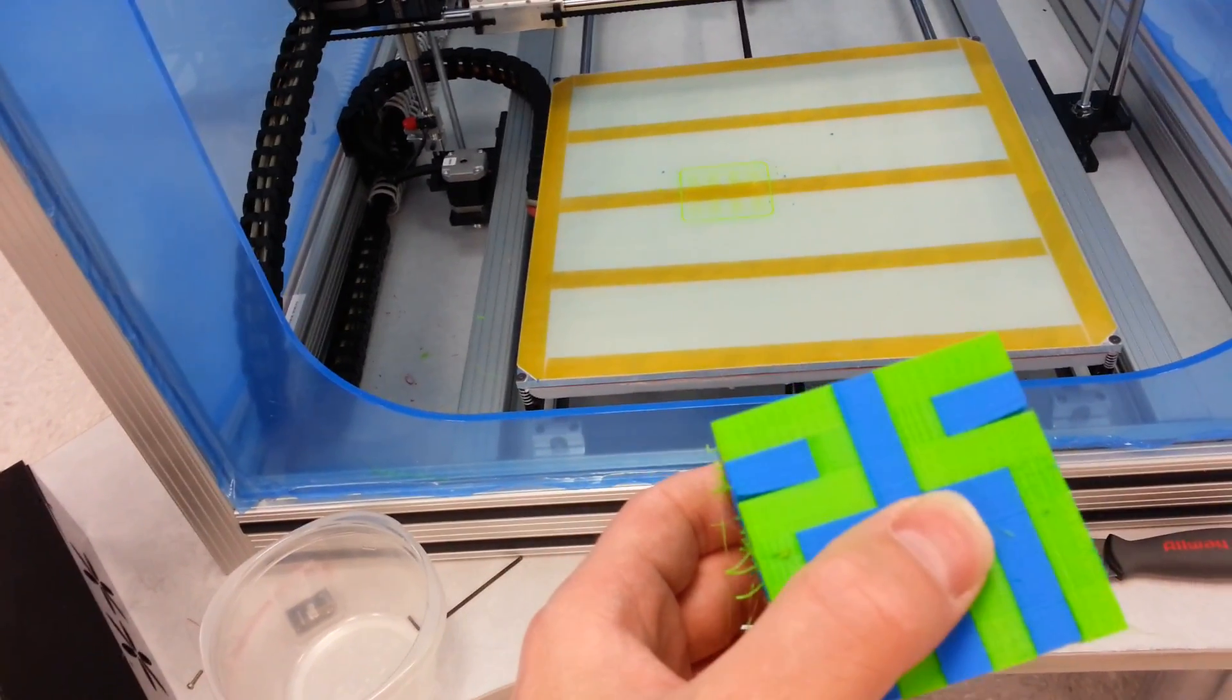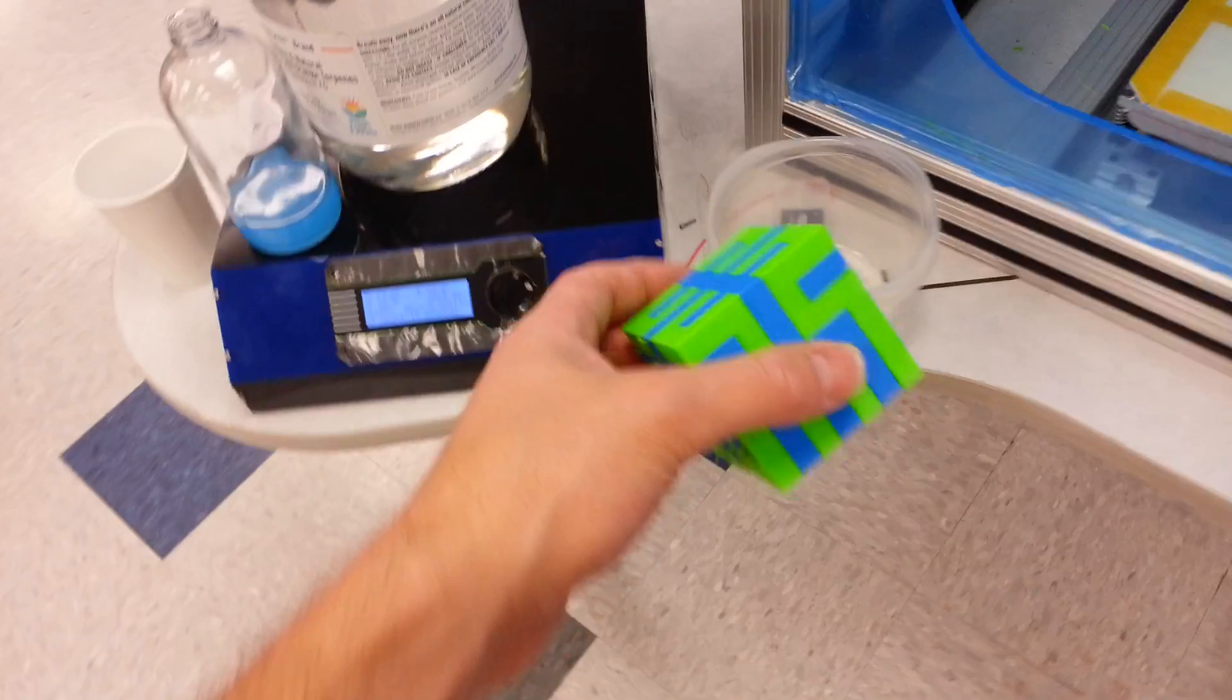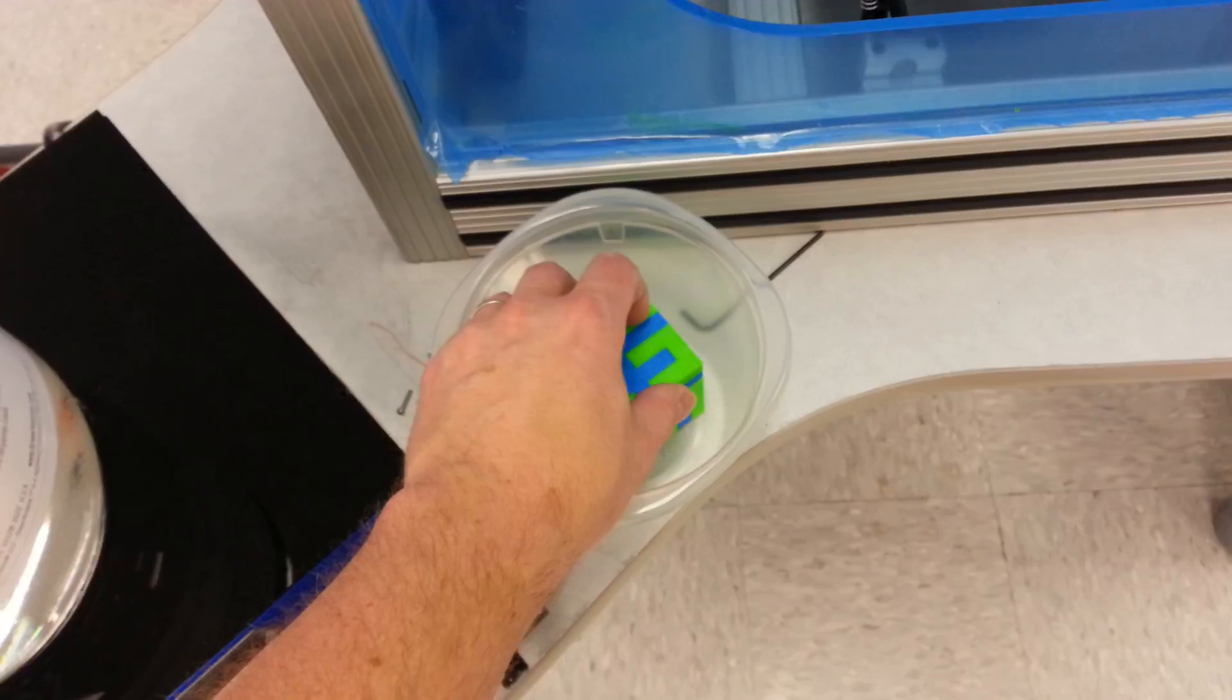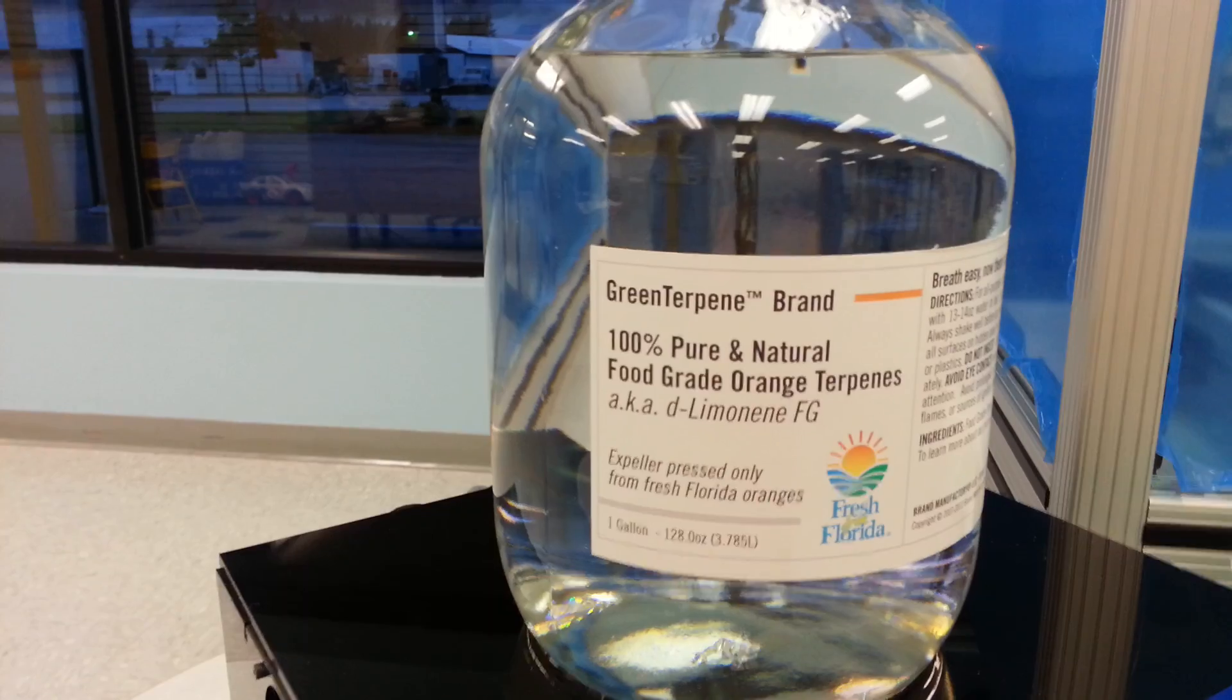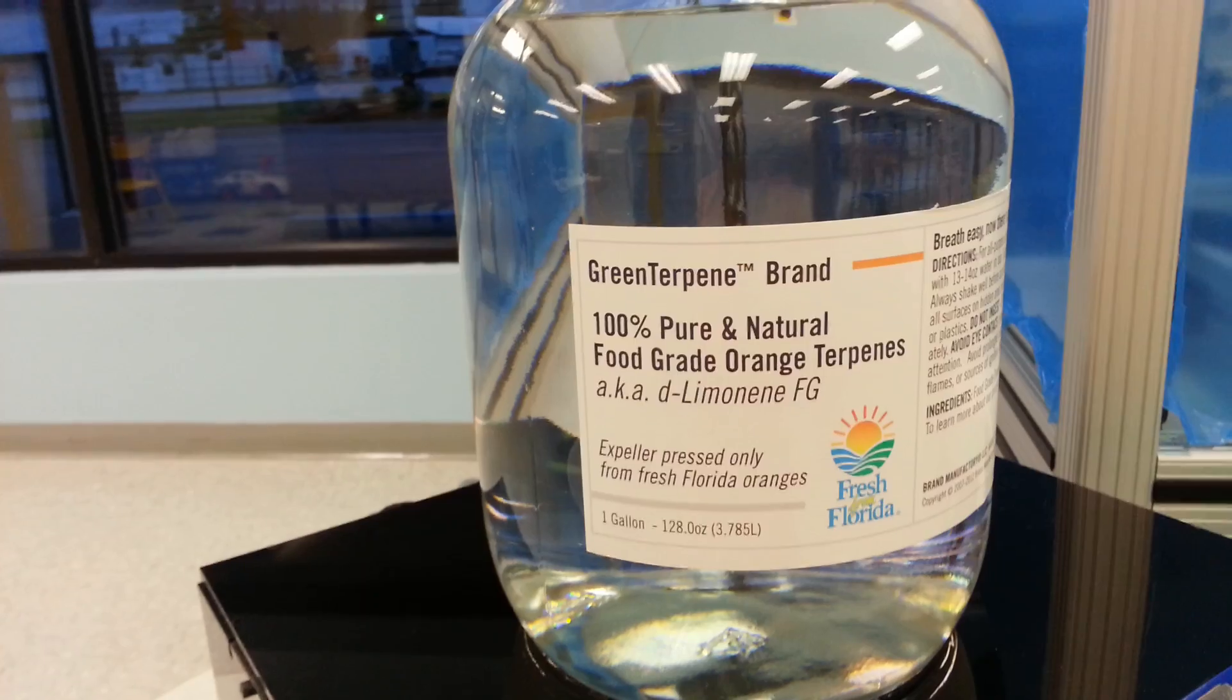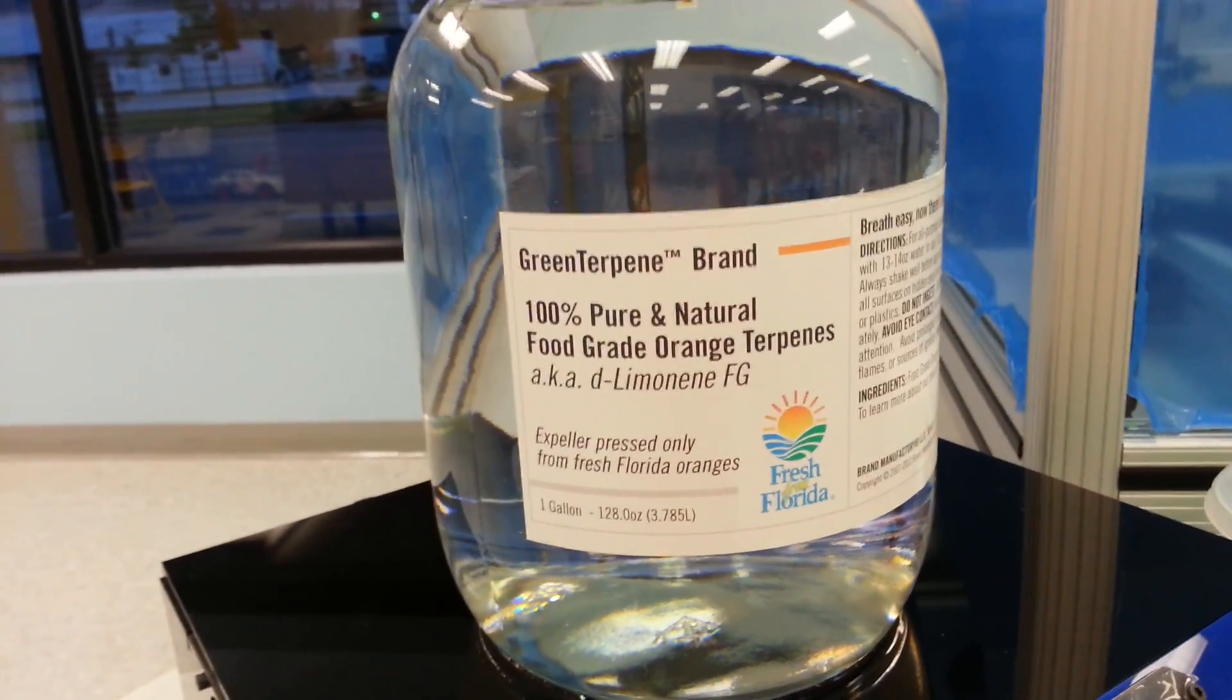So we're going to take this and set it in a container. We are going to use Green Terpene brand, 100% pure natural food-grade orange terpenes. This is d-limonene, food grade. This stuff has got a real nice citrusy smell, it's great for cleaning, and it is very safe for dissolving away your support material.